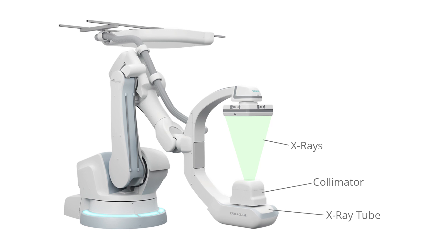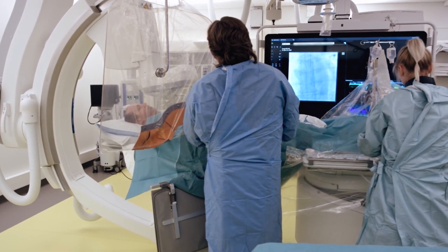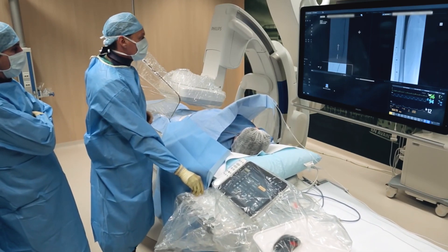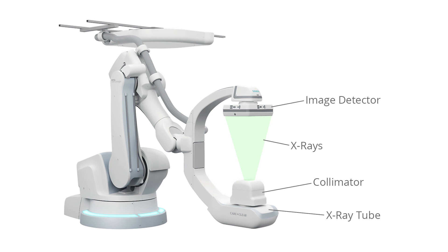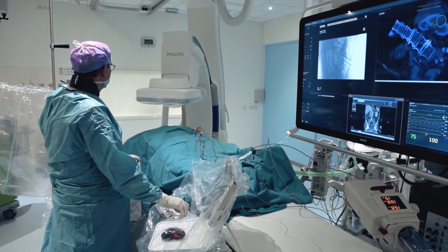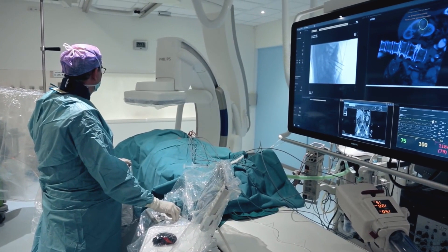Collimator: this focuses the x-ray beam by allowing only x-rays traveling in a certain direction to pass through. Patient: the x-rays go through the patient and some of the radiation is absorbed. Denser structures such as bone absorb more x-rays than softer structures. Table: this is what the patient lays on. Image detector: this is what collects the x-rays that went through the patient to form the moving image. User interface: this is how the user operates the fluoroscopy system. Display: this displays the live x-ray view.